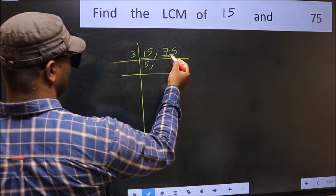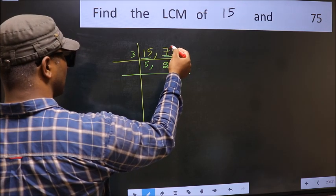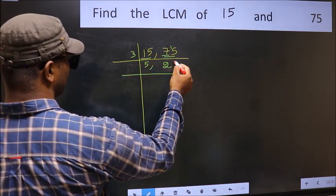First number 7. A number close to 7 in the 3 table is 3×2=6. 7 minus 6 is 1. 1 carried forward to 15. When do we get 15 in the 3 table? 3×5=15.